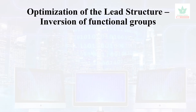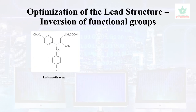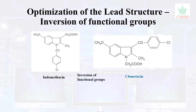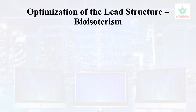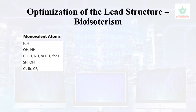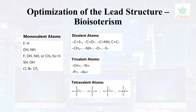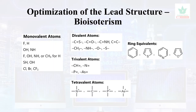Inversion of functional groups is another optimization strategy — when inversion was applied to indomethacin, it gave rise to the more potent clomethacin, used as a non-steroidal anti-inflammatory drug. Bioisosterism involves interchanging groups to improve pharmacokinetic activity without compromising pharmacological activity. Monovalent, divalent, trivalent, and tetravalent atoms can be interchanged, and ring equivalents such as benzene replaced with thiazole, pyrimidine, pyridine, or furan rings are used.